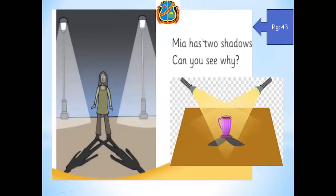I am really happy. Because, you can see, there are two sources. Each source creates its own shadow. That is why two shadows are formed.